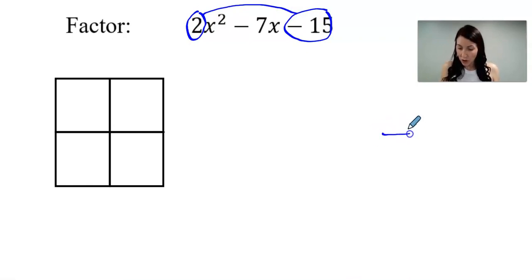What we're going to do is look for two numbers that multiply to that number, negative 30. Then I want to find the same two numbers, but I want them to add to the b value. That's the coefficient of the middle term, negative 7.